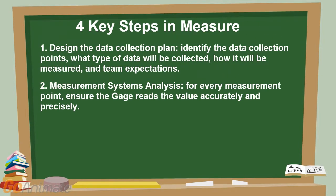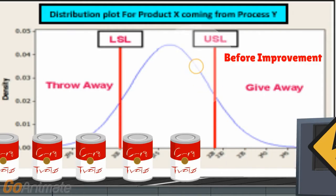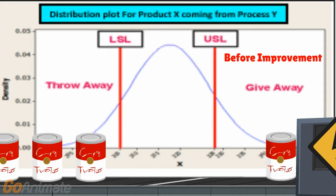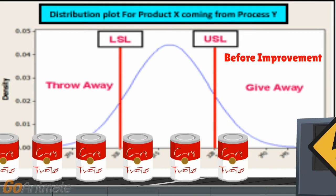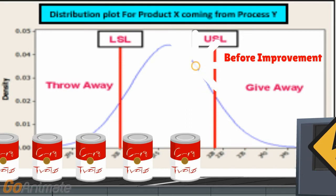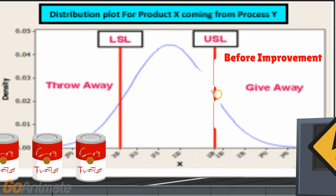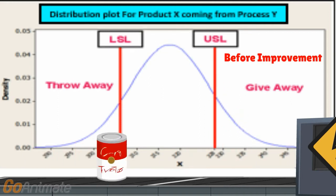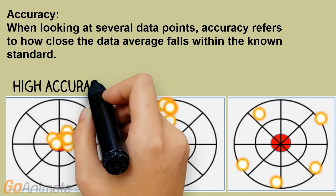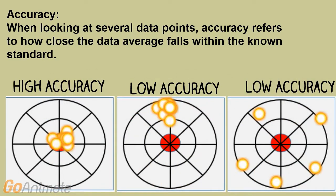Measurement Systems Analysis: for every measurement point, ensure the gauge reads the value accurately and precisely. For instance, a common gauge in process capability studies is a checkweigher. The checkweigher must be both precise and reliable. Prior to starting a process capability study, verify the checkweigher is not contributing significant weight variation between cup to cup by performing an MSA. In MSA, verify the gauge has high accuracy.